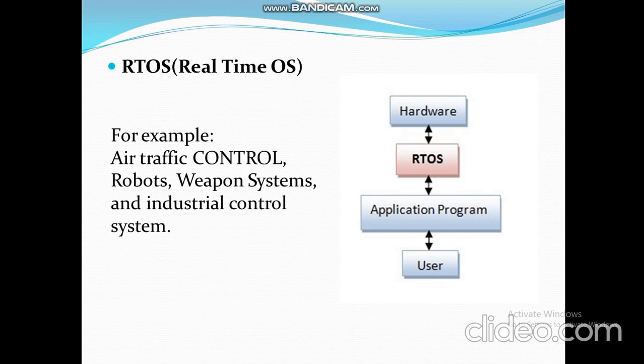There are two types of real-time operating systems: hard real-time systems and soft real-time systems. Hard real-time systems guarantee that critical tasks are completed in time. Soft real-time systems are less restrictive. Examples of soft real-time systems include undersea exploration, planetary rovers, and virtual reality.